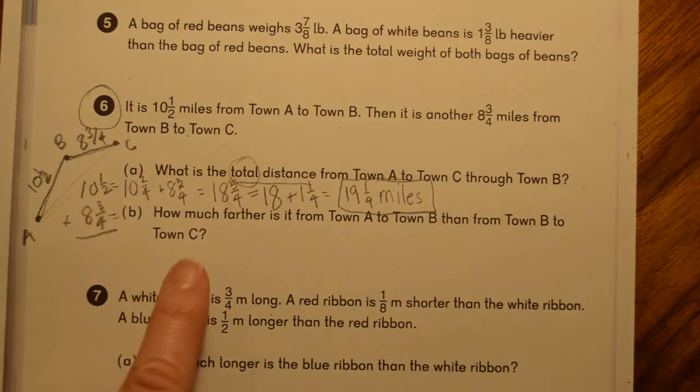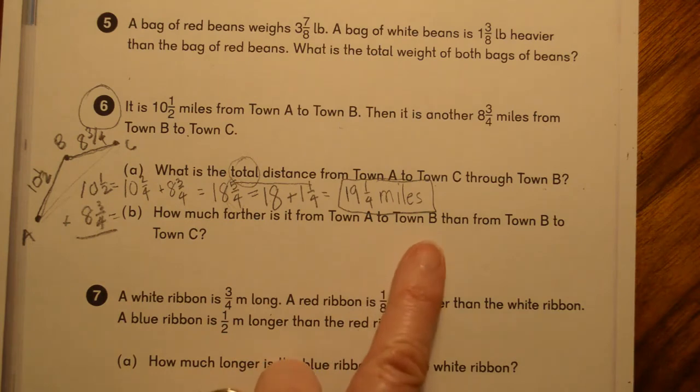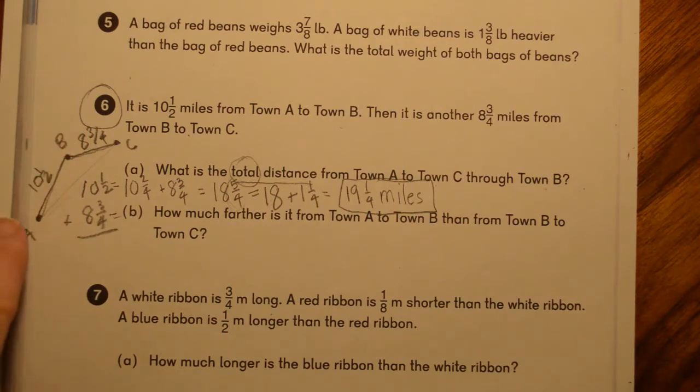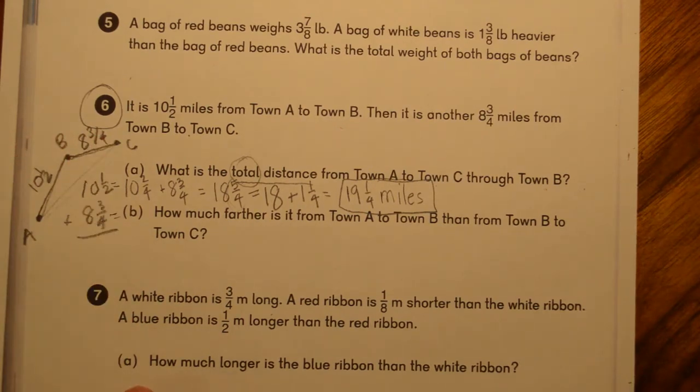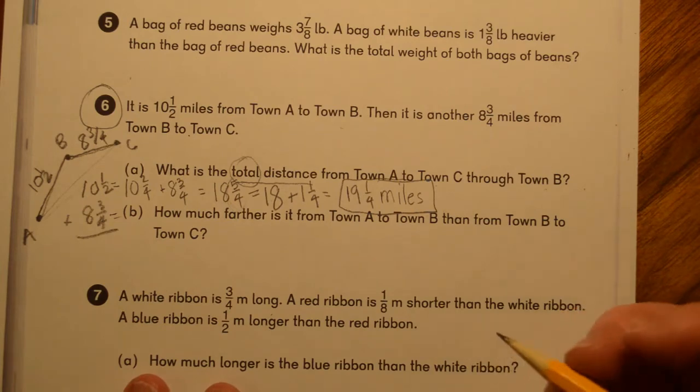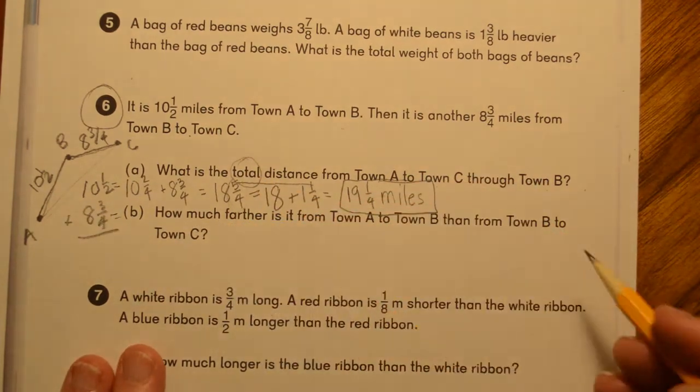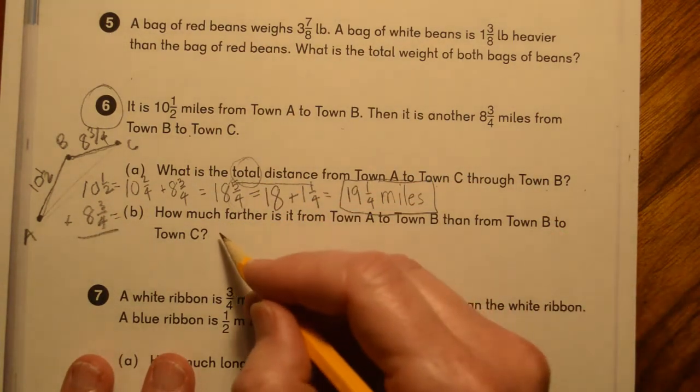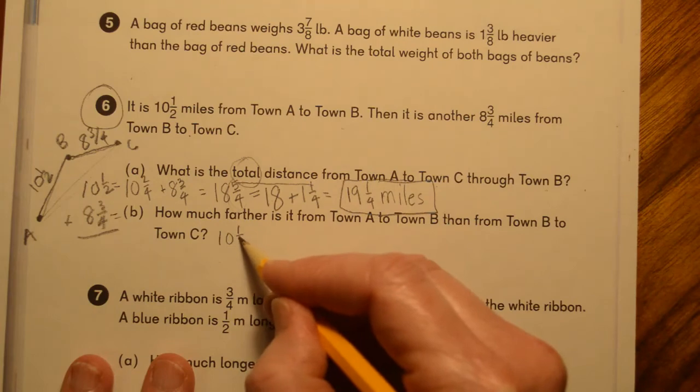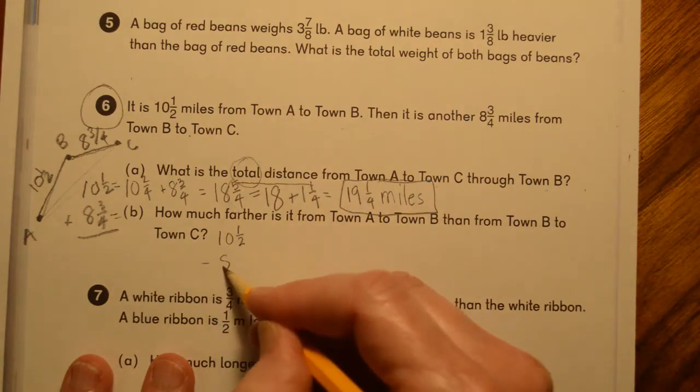Part B. How much farther is it from town A to B than from town B to C? So it's asking, what is the distance? What's the excess distance that we have to go from A to B compared to B to C? So this one is going to be subtraction because we're trying to find the difference between the two. How much farther is it? So we're going to do ten and a half minus eight and three fourths.